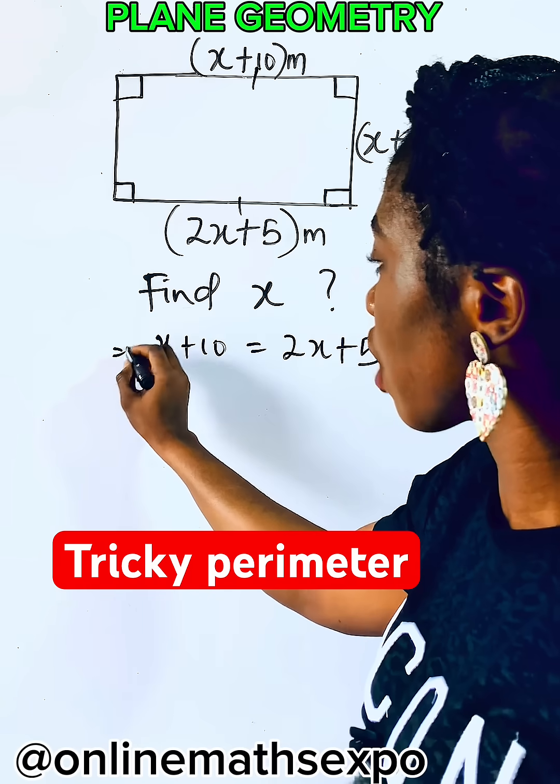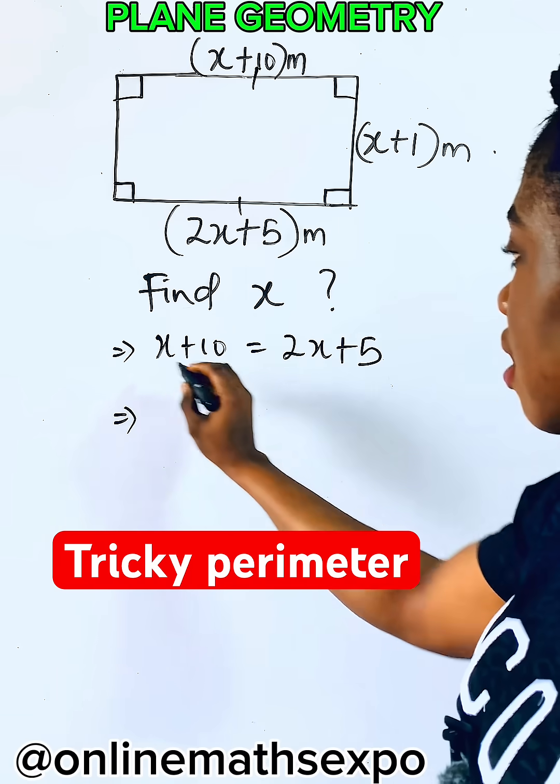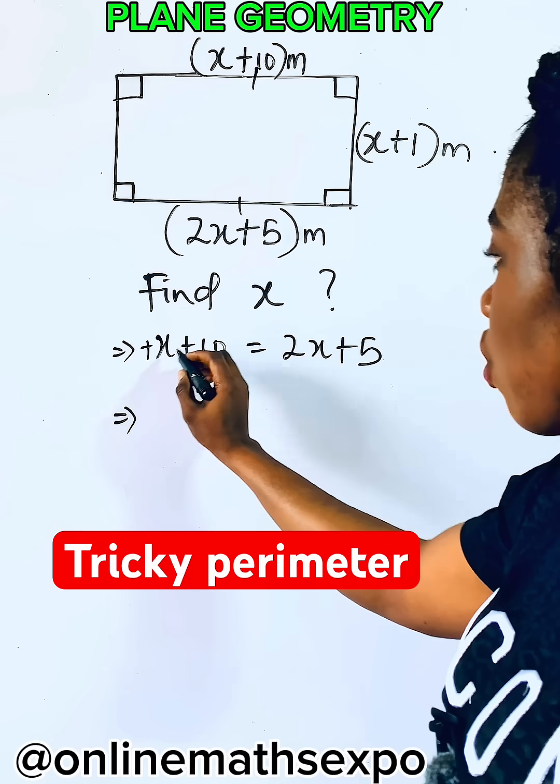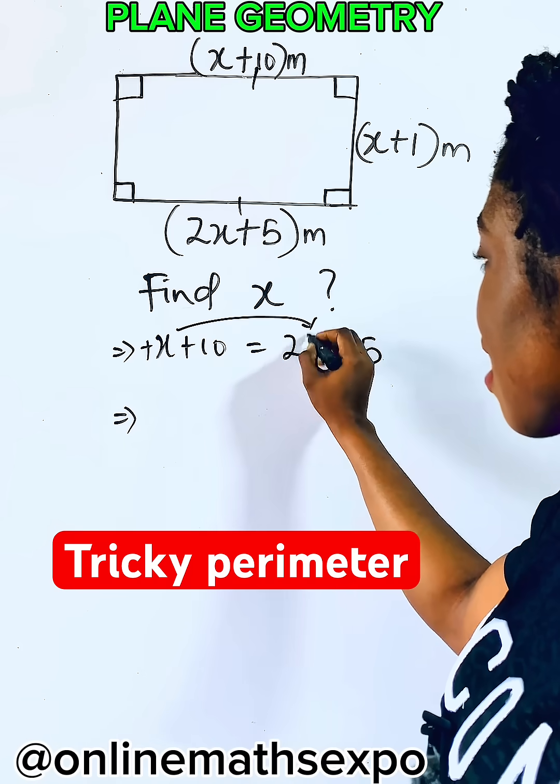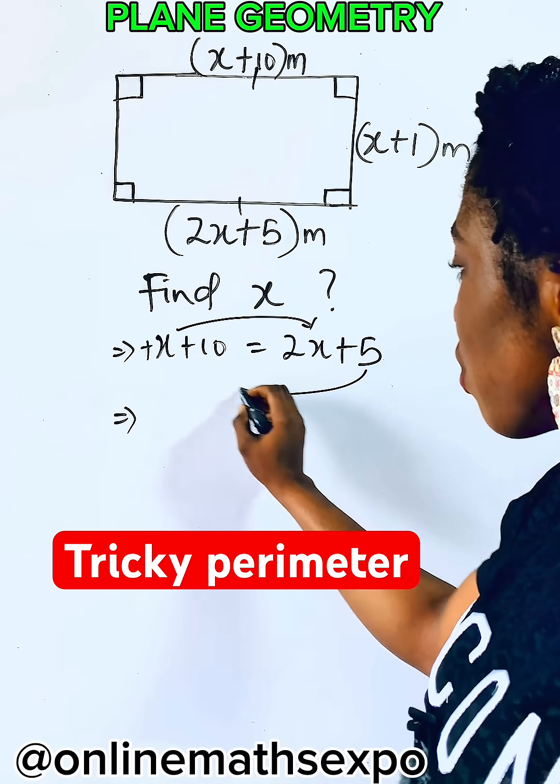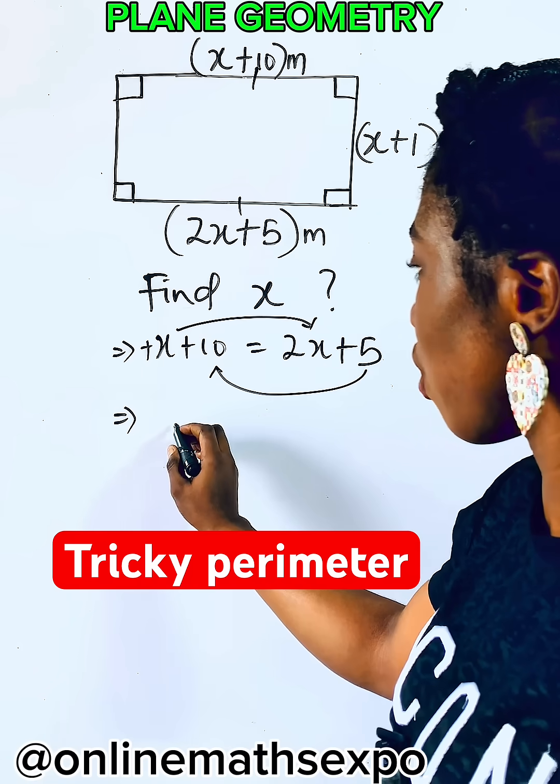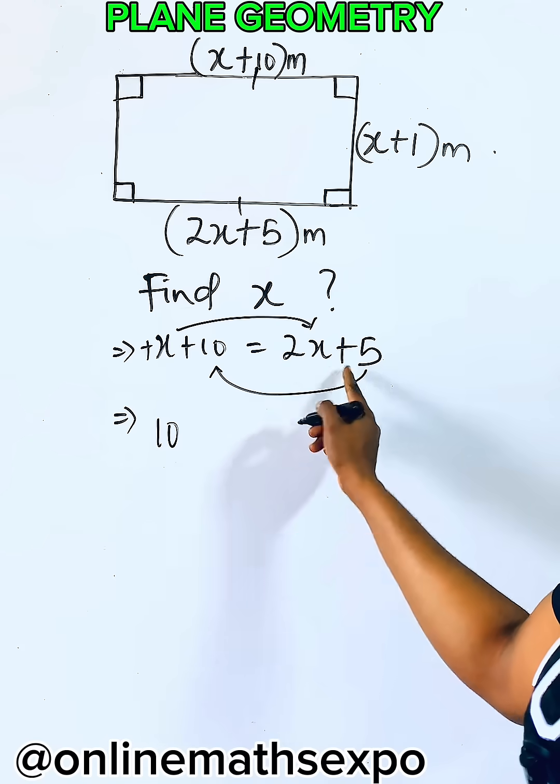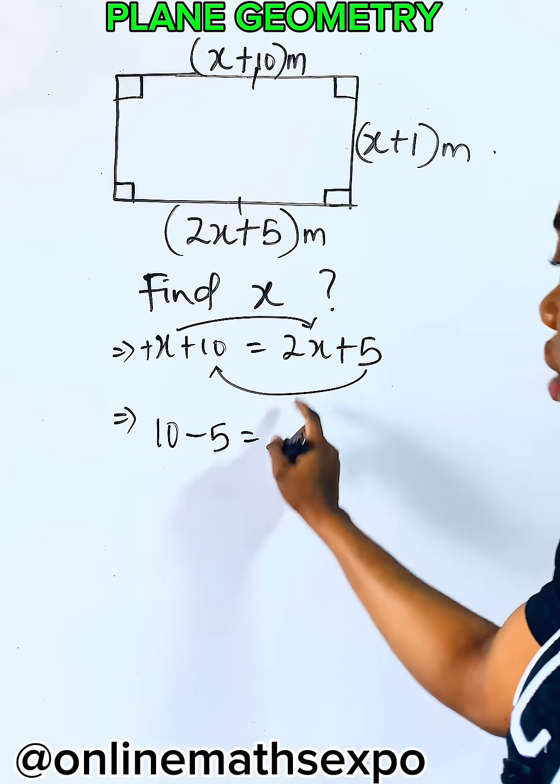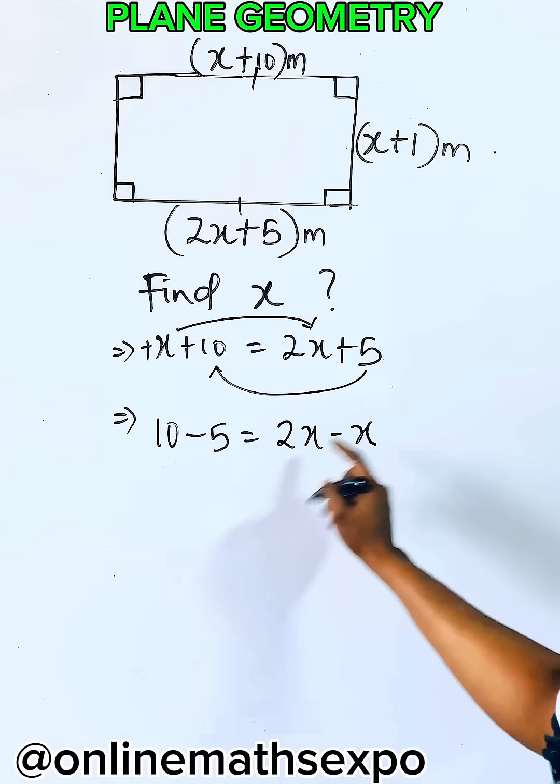So solving this, you are going to have, remember this is positive. So you are going to take this to the right side and you can bring this to the left side. So it's going to give us 10. Then this will be negative 5 and you have 2x minus x.